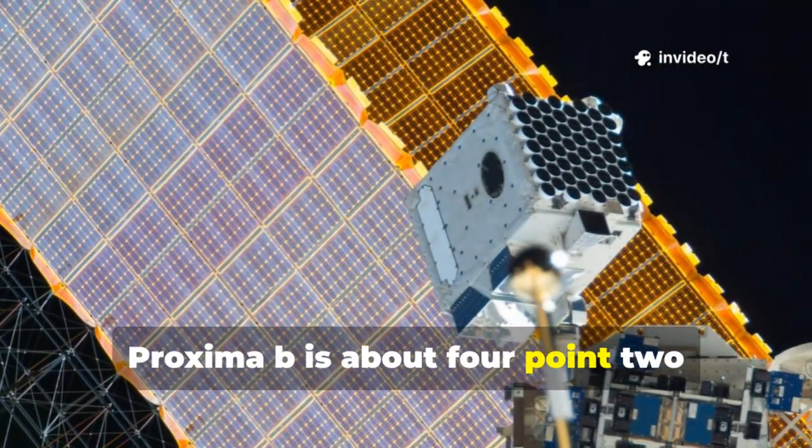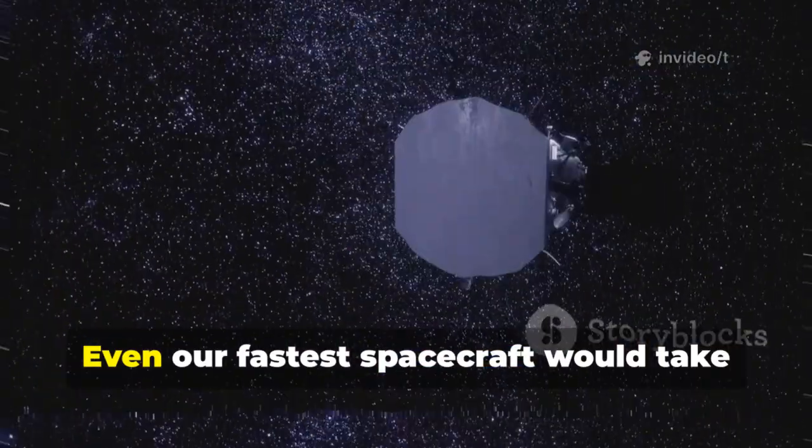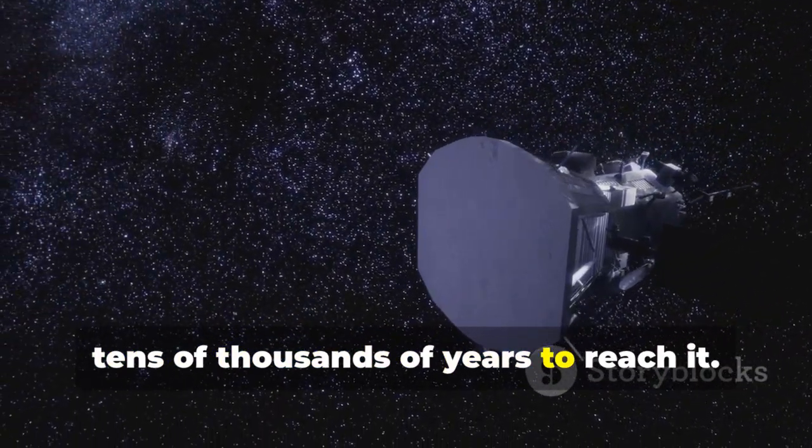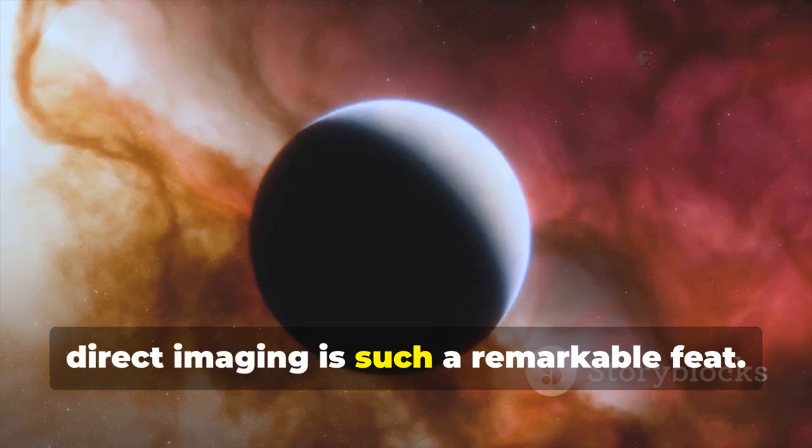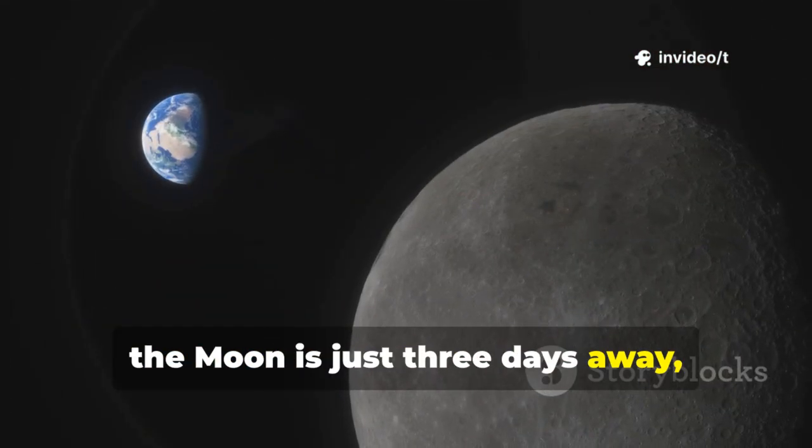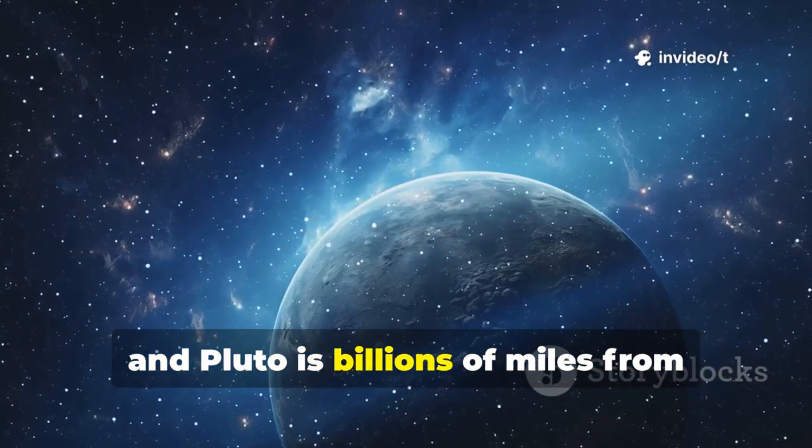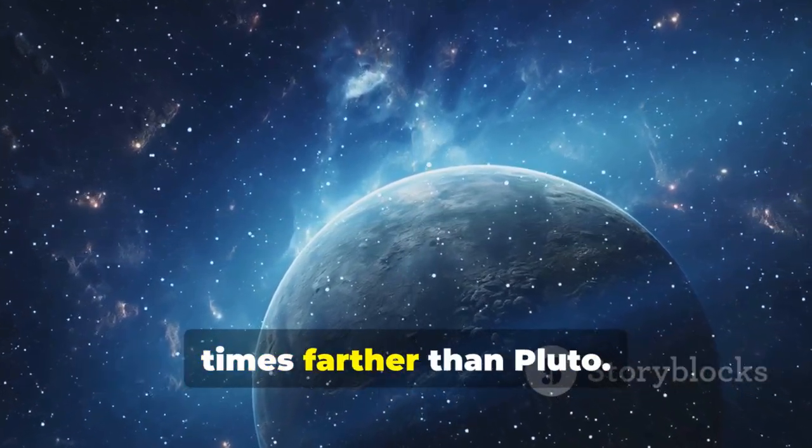Proxima b is about 4.2 light-years away, nearly 25 trillion miles. Even our fastest spacecraft would take tens of thousands of years to reach it. This immense gulf of space highlights why direct imaging is such a remarkable feat. For comparison, the Moon is just three days away, Mars takes months, and Pluto is billions of miles from Earth. Yet Proxima b is over 7000 times farther than Pluto.